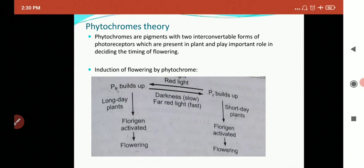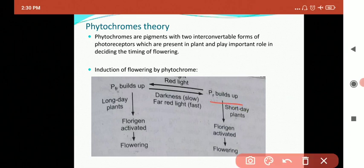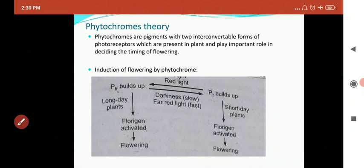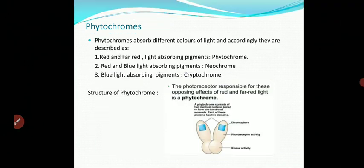In the case of short-day plants, phytochrome R (PR) builds up or activates the flowering hormone, which then induces flowering. Phytochromes absorb different colors of light and accordingly are described as red and far-red light absorbing pigments. These are called phytochromes.